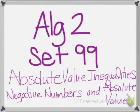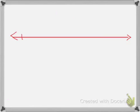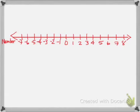Algebra 2, set 99: absolute value inequalities and negative numbers in absolute value. If we look at a regular number line, you can order all of the real numbers on a number line. Usually we just put the integers on, and you can see that there's a definite order to the numbers.